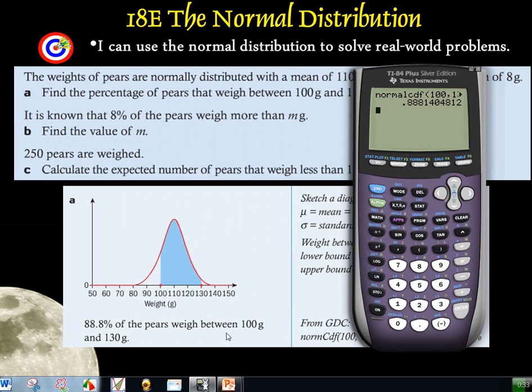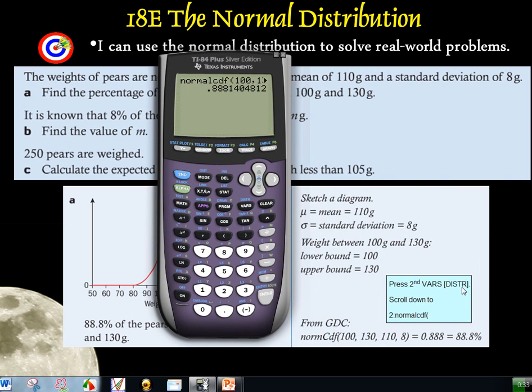Now again, it does look a little bit different on the 83. Once you get to this normalCDF, instead of getting this other screen, you'll get this screen right here and you'll get the parentheses and you just do 100, 130, and then I believe we do the 110, and then 8. And then close your parentheses and push enter and you'll get your 88.8%.